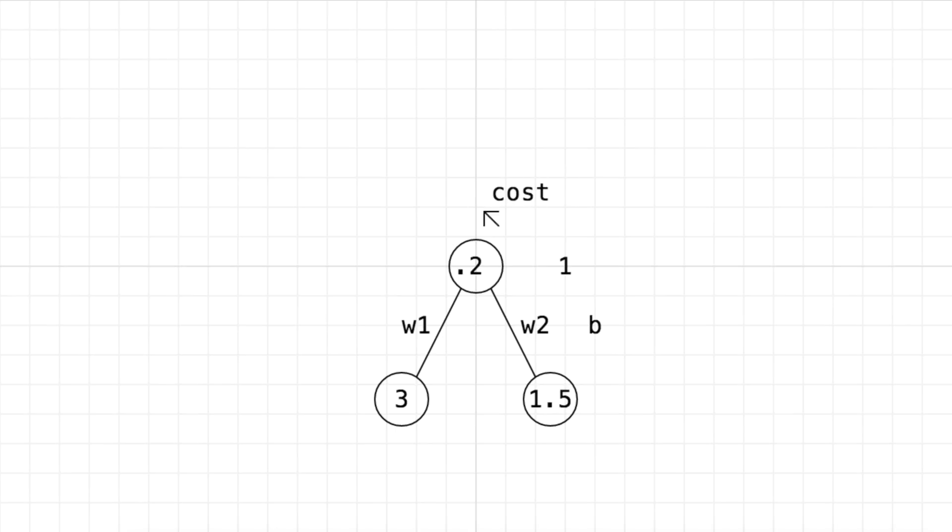Now the cost function is going to take the prediction and the true target value and output a number. Now let's define the cost function. It's going to involve the prediction and the target value. We're going to take the difference of the two, and then we're going to square the difference,